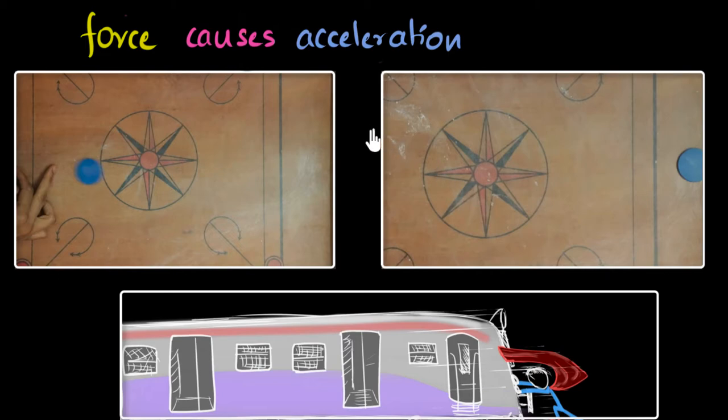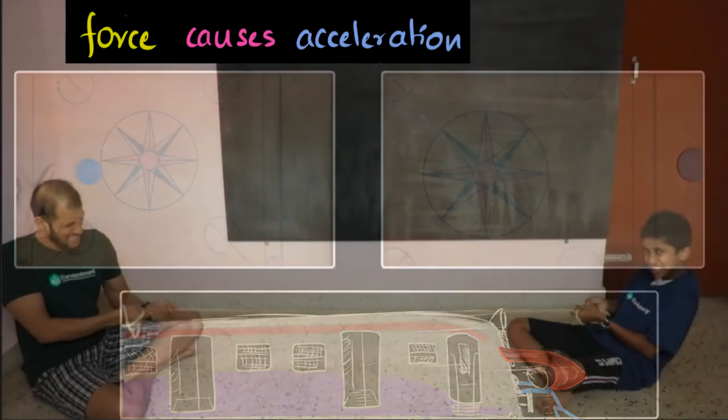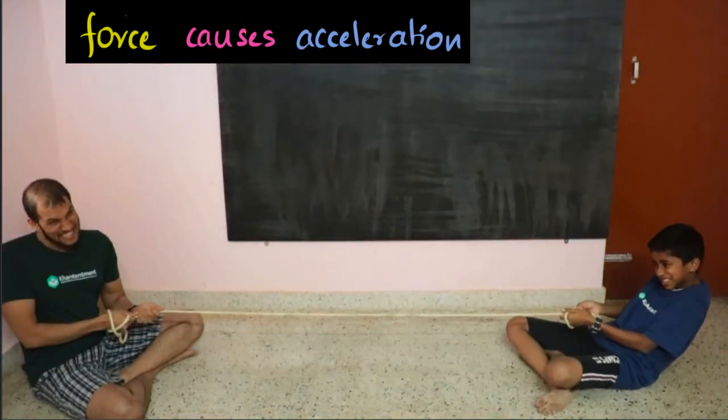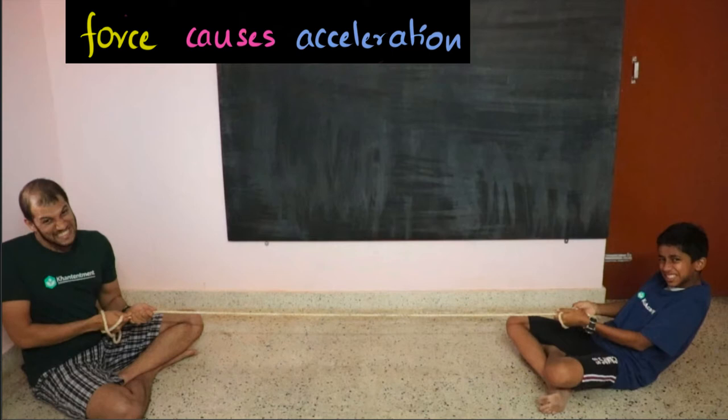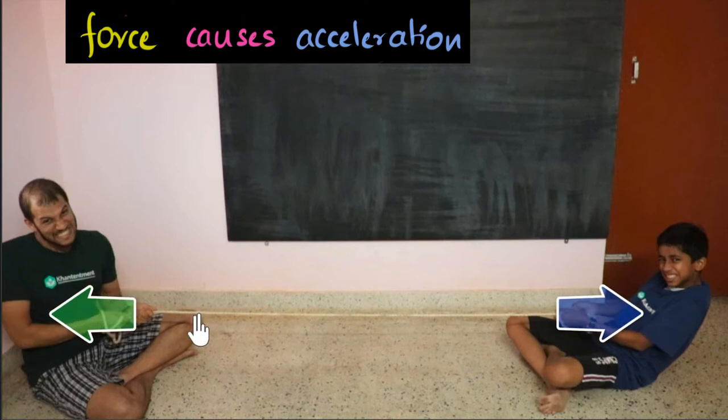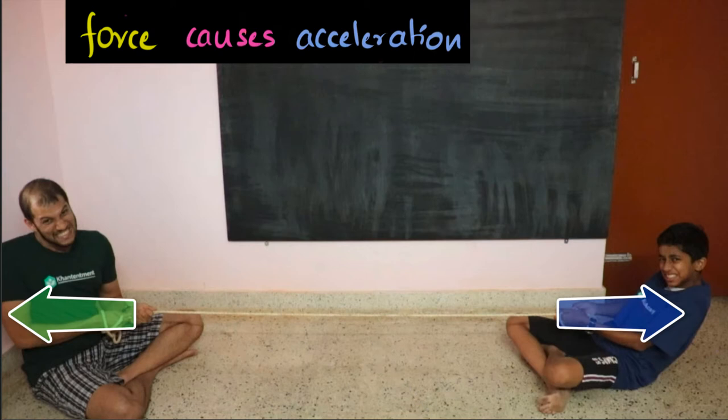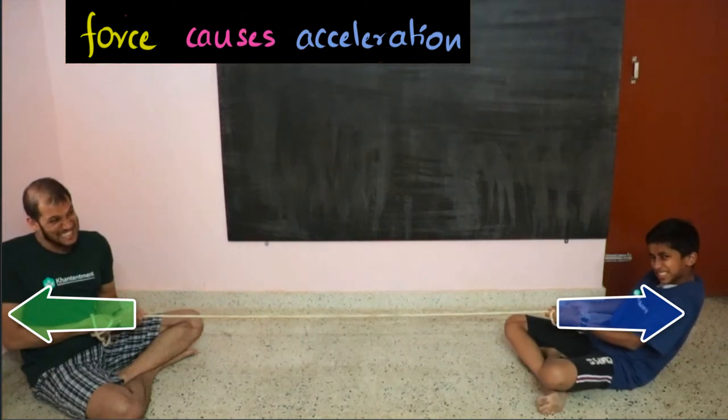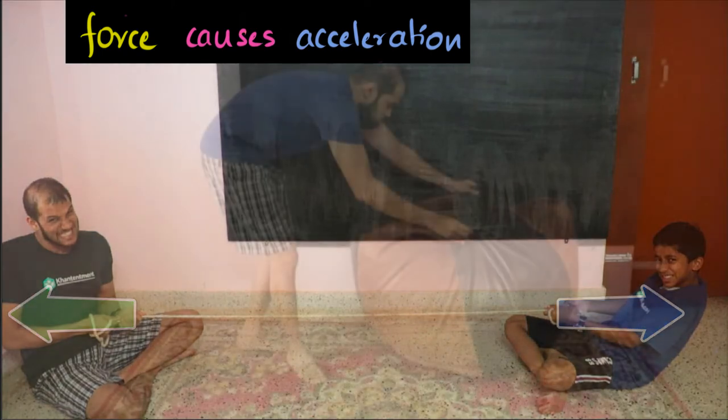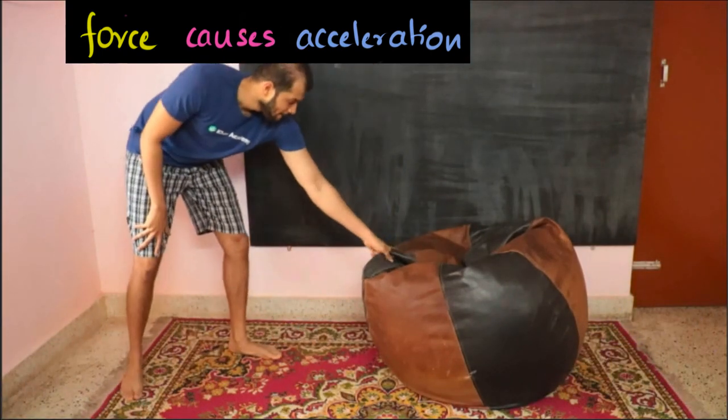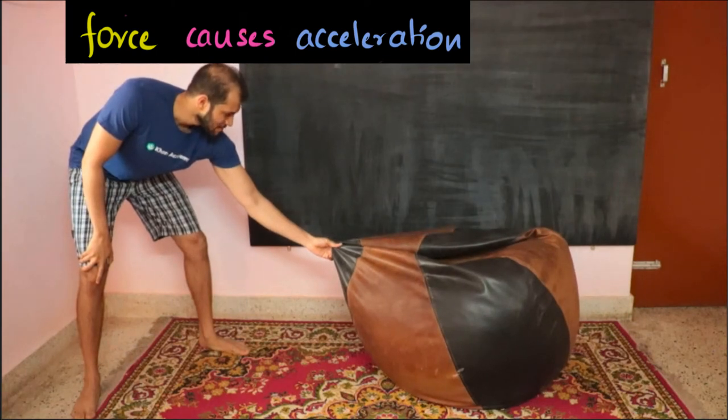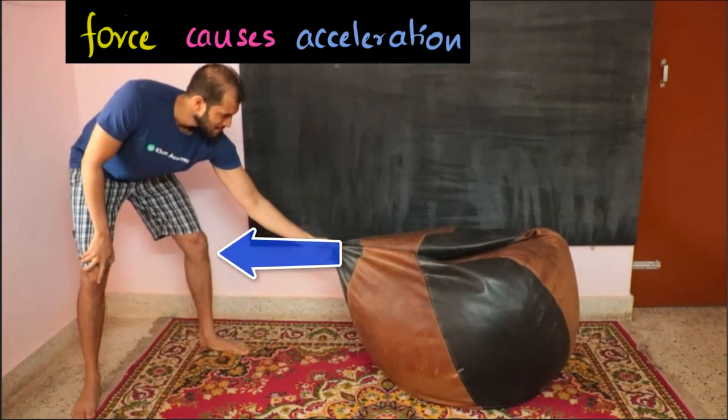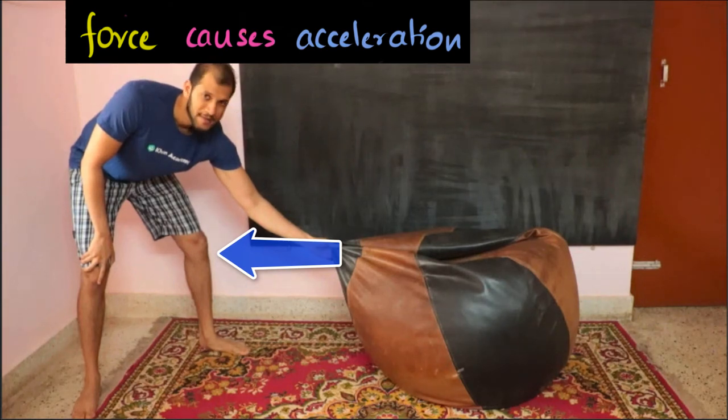But do forces always cause acceleration? Well, let's see. Take a look at this video of our tug of war. What do you see? Besides our Oscar-winning acting faces, you see that both of us are pulling on this rope. So there are forces acting on this rope, yet that rope is not accelerating. It was at rest before and look, it is still at rest. Why isn't it accelerating? Let's look at another one. Here's a bean bag kept on the floor. Now I start pulling on it, and look, the bag is not accelerating. Even though I'm putting a force on it, the bag has no acceleration. It's staying at rest. Why?